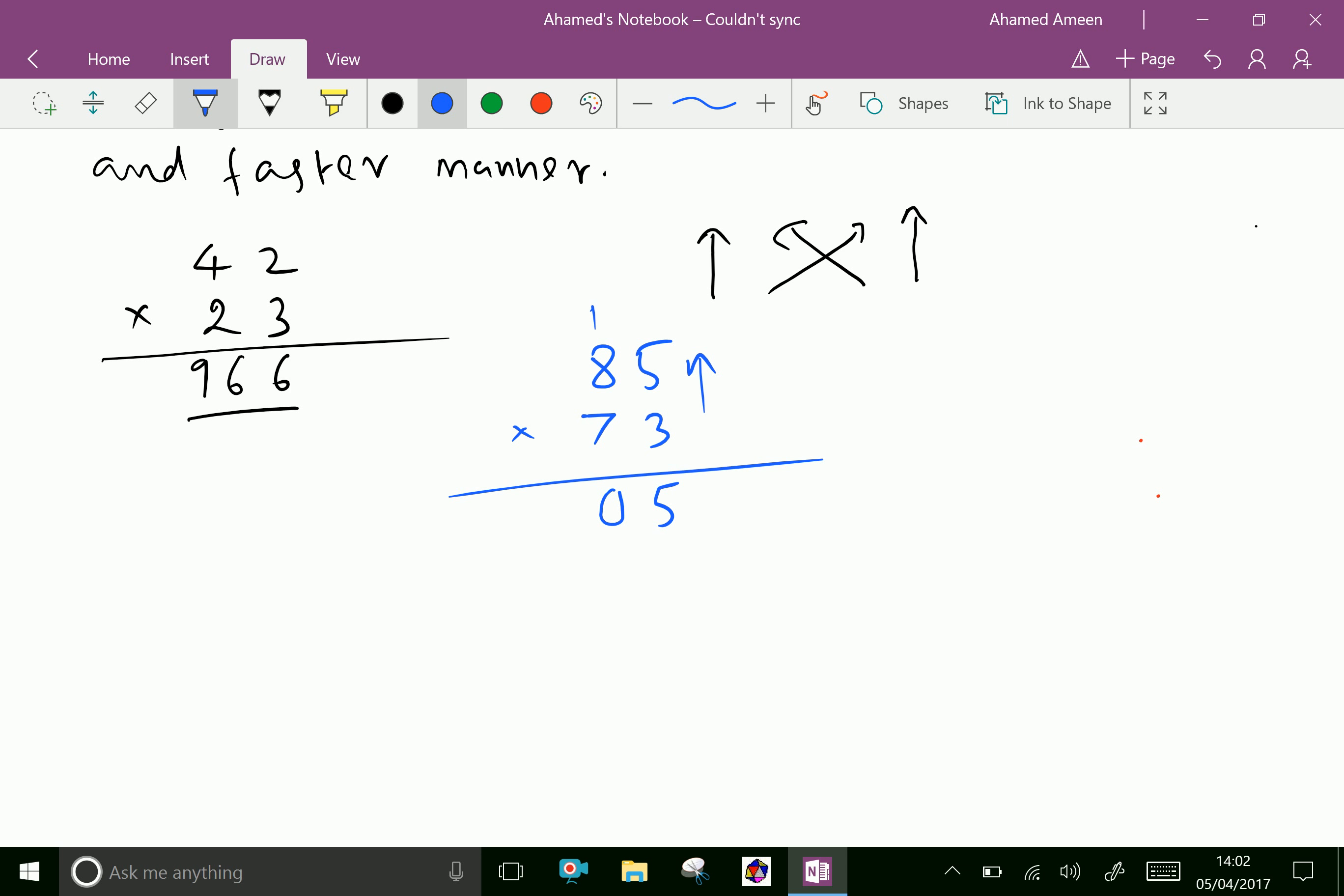Put 0 and 6 carries. 7 times 8 is 56, 56 plus 6 is 62.